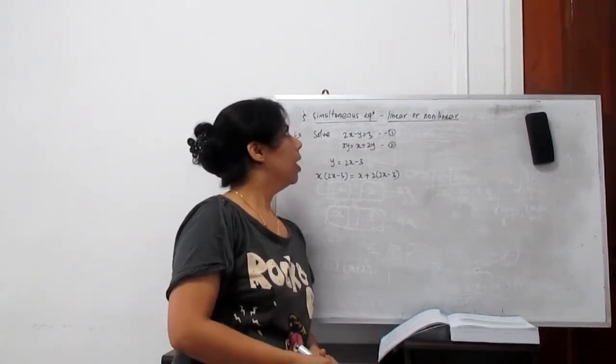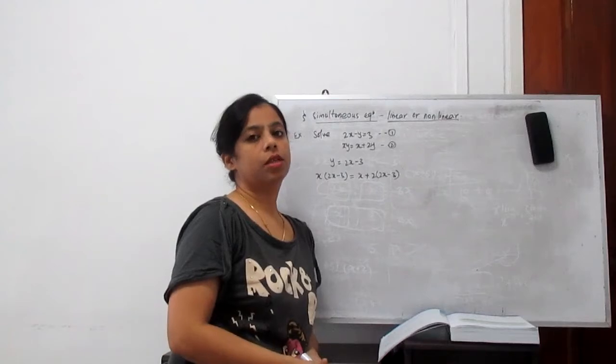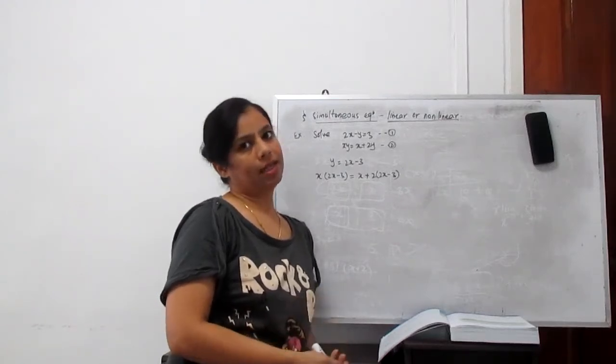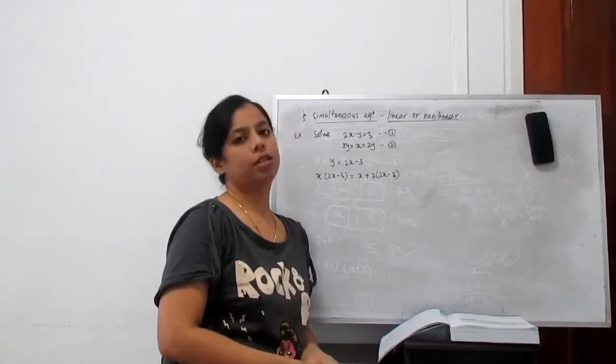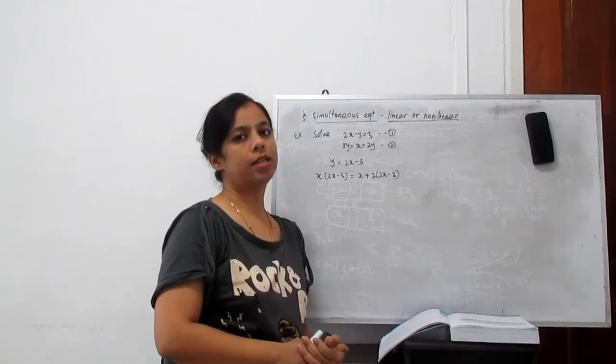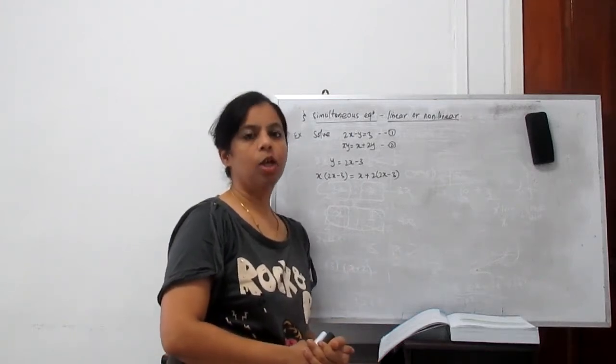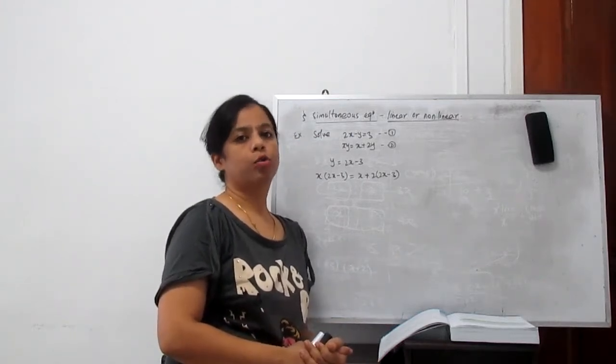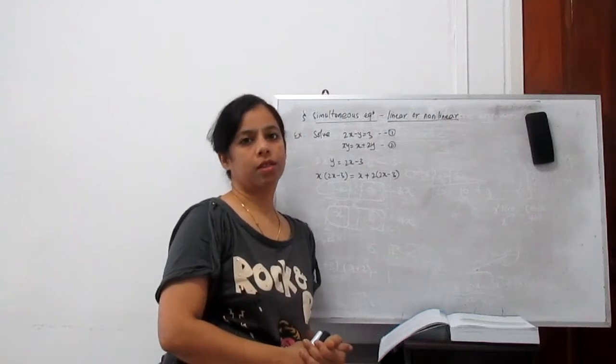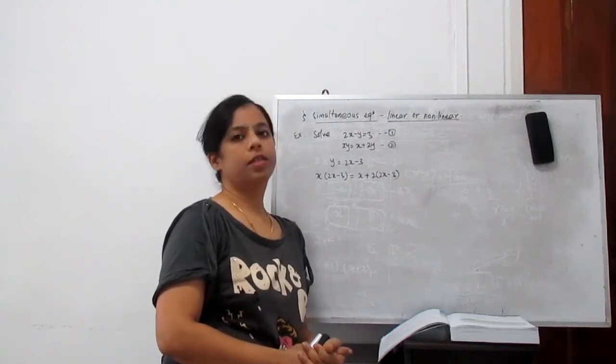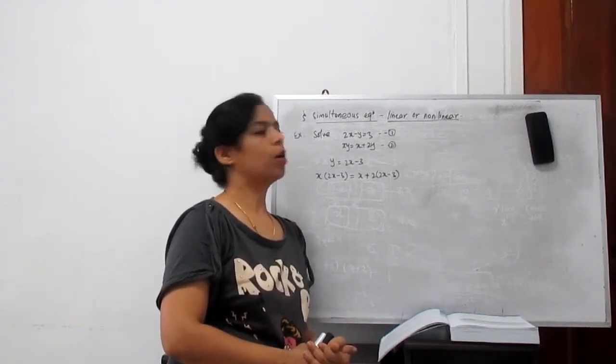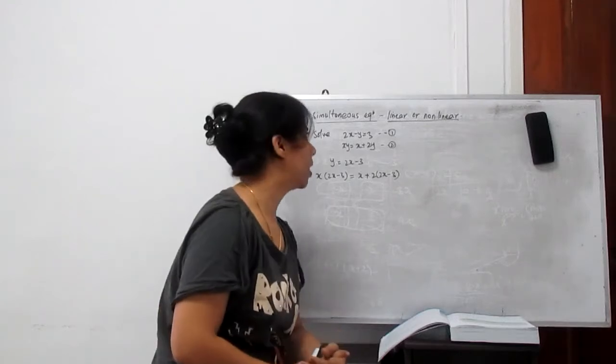Now I will show you simultaneous equations where one set is linear and another is non-linear. This means if one is a linear equation with degree one, another is a quadratic equation with degree two. We already learned how to solve linear equations. Now I will teach you how to solve when one is linear and another is non-linear.